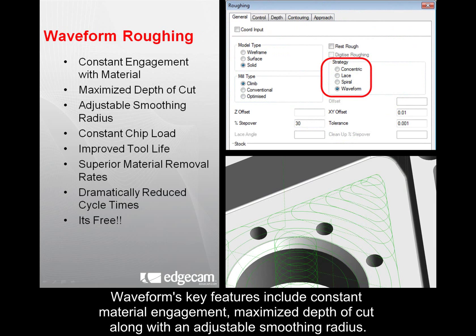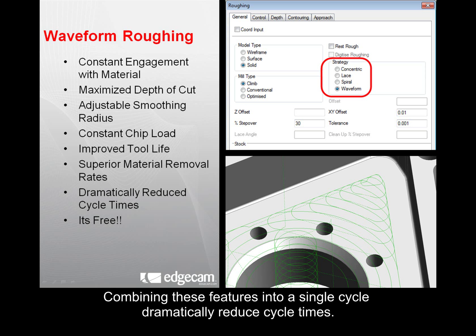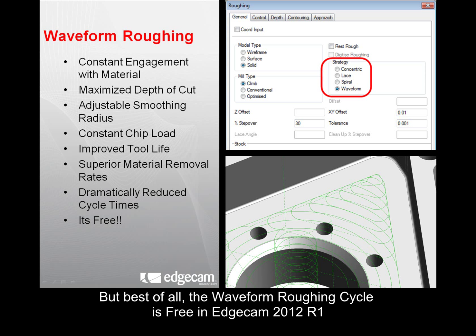Waveform's key features include constant material engagement, maximized depth of cut, and an adjustable smoothing radius. Having a constant chip load will increase your tool's life while boosting material removal rates. Combining these features into a single cycle dramatically reduces cycle times.